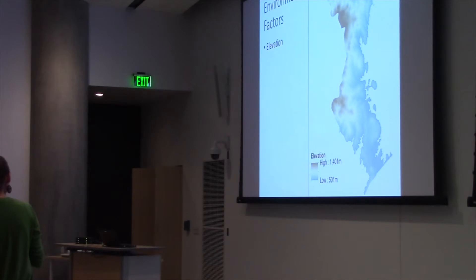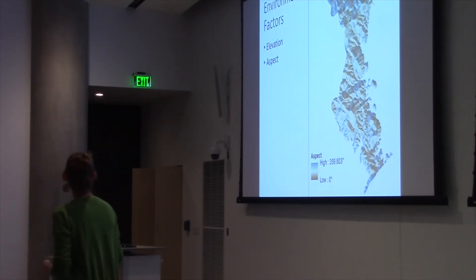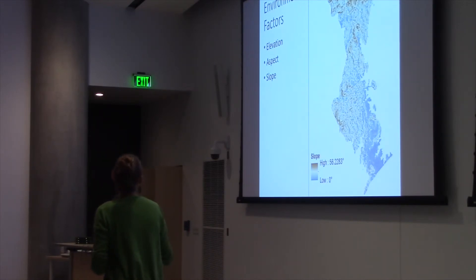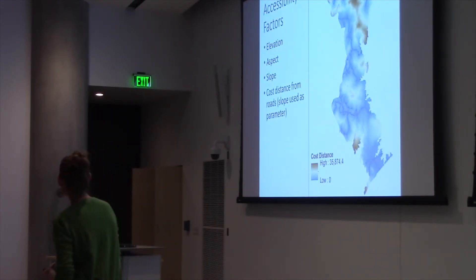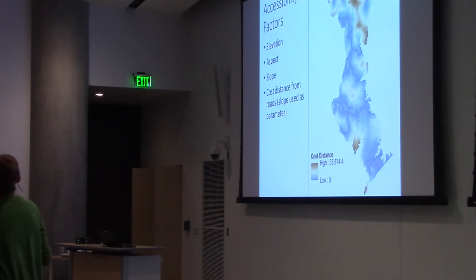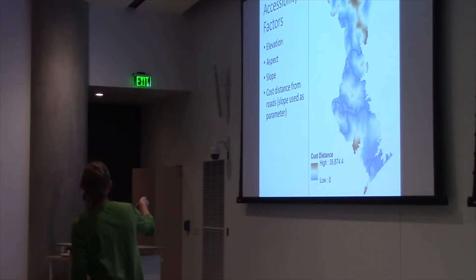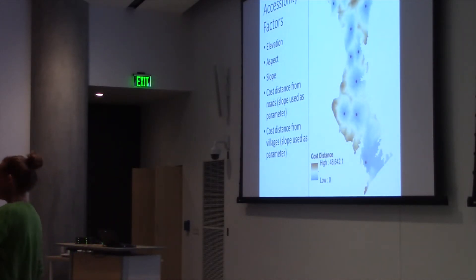What were the environmental factors that I could look at? I looked at slope. Then there were accessibility factors as well. I looked at cost distance from roads, being of course the farther away you get from a road, the harder it is to get somewhere. Being that this was a very mountainous region, I also used slope as a parameter. You can see the resulting cost distance surface there. I did the same thing with villages. Again, slope was used as a parameter. The farther away from a village, the harder it would be to get to some place.